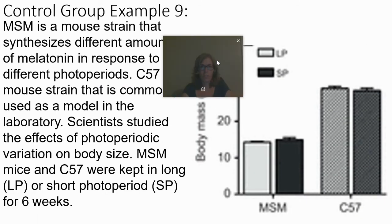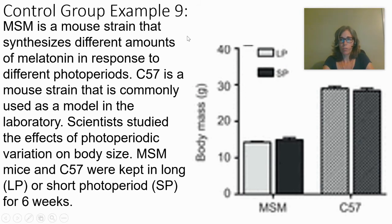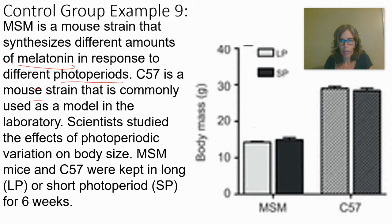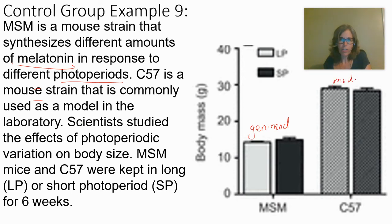Next, there are MSM mice — a genetically modified strain that synthesizes different amounts of melatonin in response to different photoperiods. Melatonin is a natural hormone that helps regulate sleep. C57 is a commonly used laboratory mouse strain — essentially normal, non-genetically modified model mice. Scientists studied the effect of photoperiodic variation on body size.